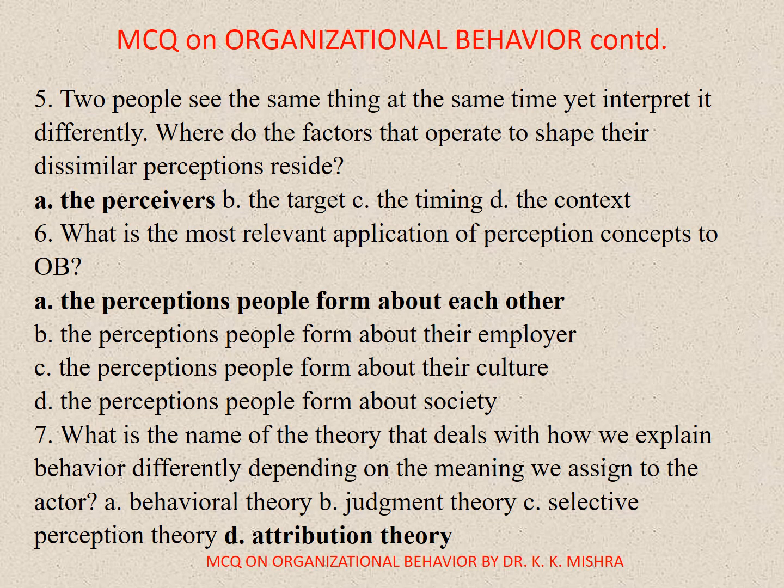Question 7. What is the name of the theory that deals with how we explain behavior differently depending on the meaning we assign to the actor? A. Differential Theory, B. Judgment Theory, C. Selective Perception Theory, D. Attribution Theory. Correct option is D. Attribution Theory.